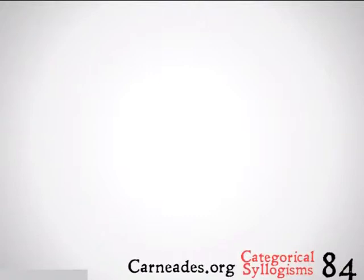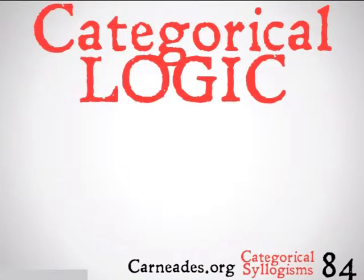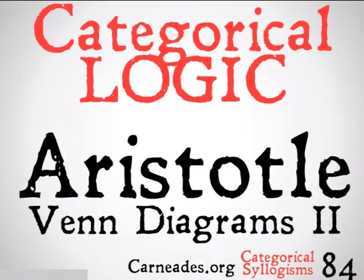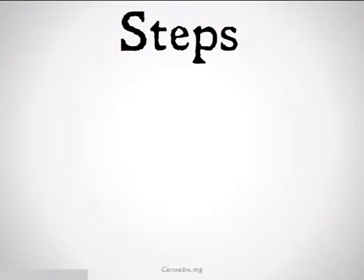Welcome back to 100 Days of Logic with 90-second philosophy and carnades.org. Today we're going to be continuing with categorical logic and categorical syllogisms, looking at Aristotelian Venn diagrams and some invalid cases for categorical syllogisms. Let's take a look.